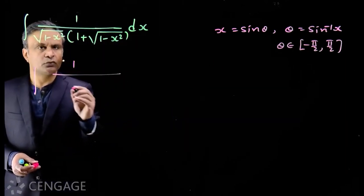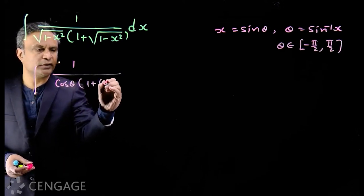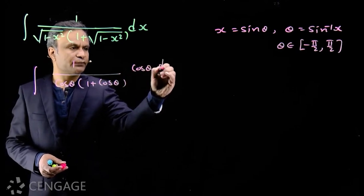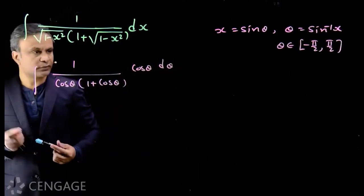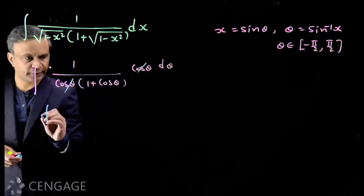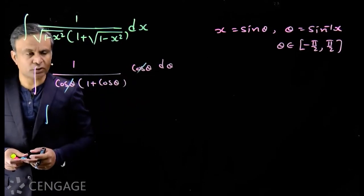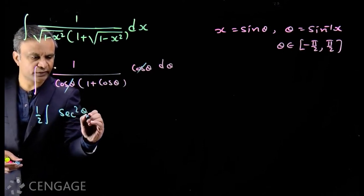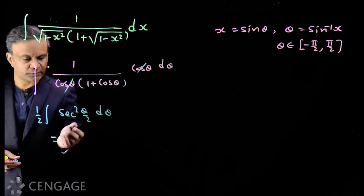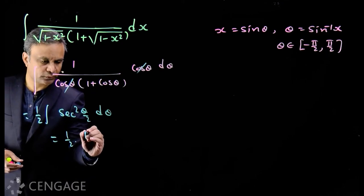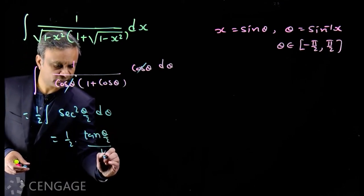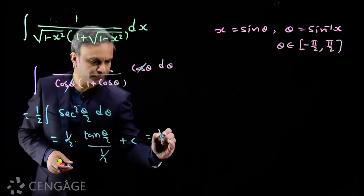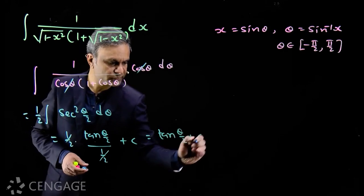So we have 1/(cosθ · (1 + cosθ)) and dx = cosθ dθ. cosθ gets cancelled out. And 1 + cosθ = 2cos²(θ/2), so we have 1/(2cos²(θ/2)), which is (1/2)sec²(θ/2). The integration is tan(θ/2) divided by 1/2, and the 1/2 gets cancelled out.